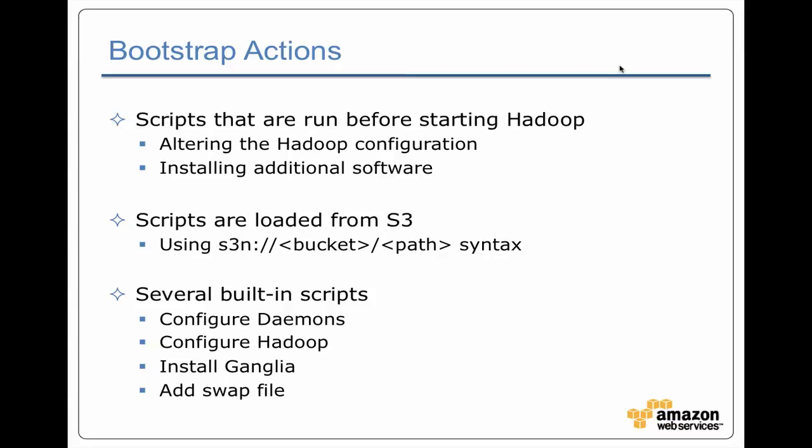Elastic MapReduce comes with a number of built-in bootstrap actions for configuring the daemons in Hadoop — like your job tracker, task tracker, name node, and data node — as well as doing things like installing Ganglia, or adding a swap file, which is actually one that you almost always want to do if you're running jobs that use a lot of memory.